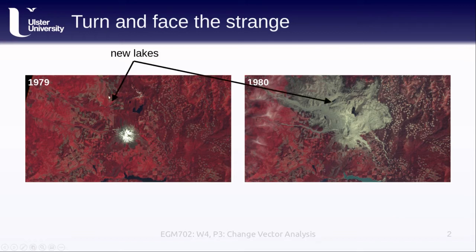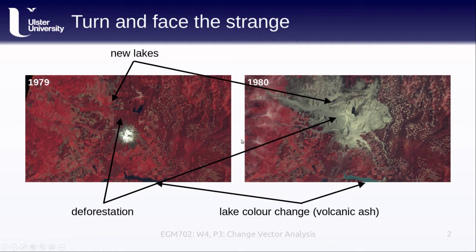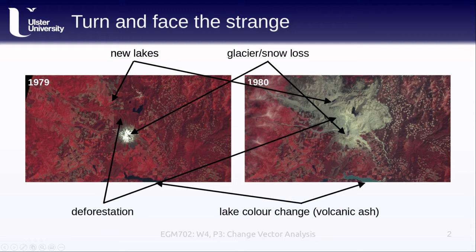For example, we can see new lakes that have formed as a result of the blockage of the river during the eruption. We also see the very obvious deforestation, but we can also see things like the change in lake color in the reservoir to the south of the mountain as a result of volcanic ash deposition, and the changes from loss of glaciers and snow on top of the mountain, going from bright white to a tan brownish volcanic ash color.